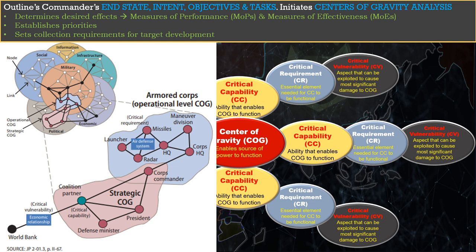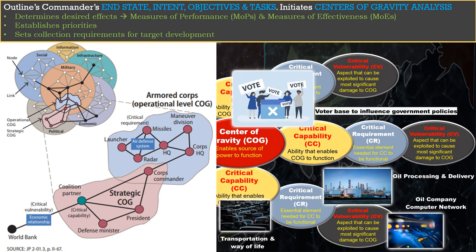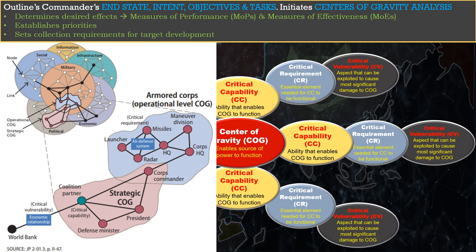This means some critical capabilities and critical requirements may be shared between centers of gravity, which makes them very likely to be critical vulnerabilities. Once COG analysis is complete, initial targets to defeat the COG are recommended and priorities of targeting are established. What everyone should exit Phase 1 with is clear MOPs and MOEs, targeting priorities, and initial collection requirements for target development.